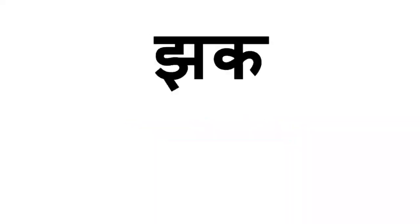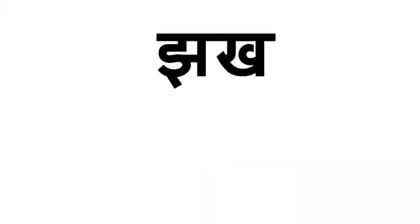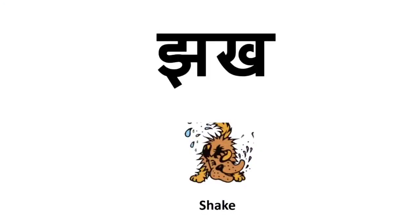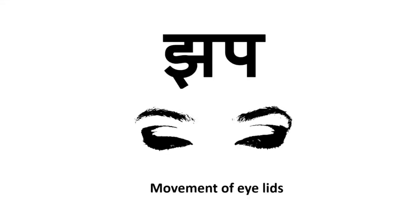The next word is Jak. Jak means unpredictable or sudden. There is no picture here for this word. Jak also means shake — you can see the picture, the dog is shaking itself. Jak also refers to the movement of eyelids, as you can see here.